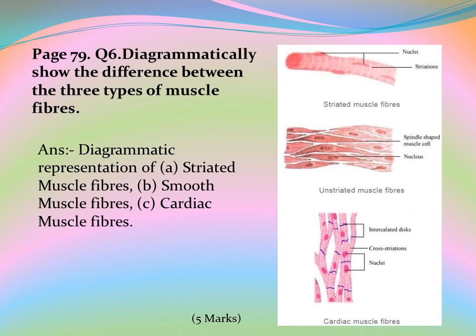Page 79, Question 6: Diagrammatically show the differences between the three types of muscle fibers. Answer: Diagrammatic representation of A. Striated muscle fiber, B. Smooth muscle fiber, C. Cardiac muscle fibers — see the diagrams.